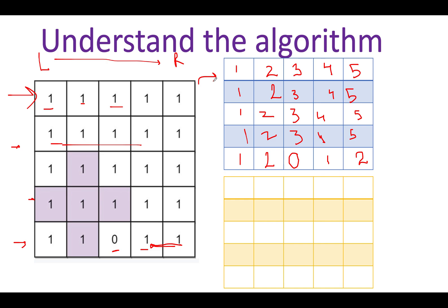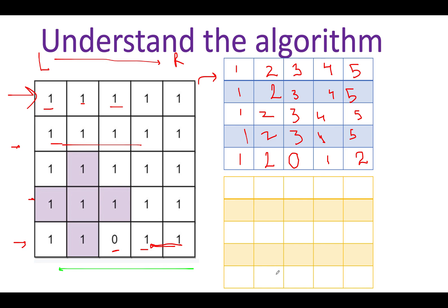Now let's do the reversal — this time moving in the reverse direction from right to left. Starting from the first row: one, two, three, four, five — filling in five, four, three, two, one from right to left. The same pattern is replicated across the other rows since they are exactly the same, so let me quickly write those up: one, two, three, four, five for each.